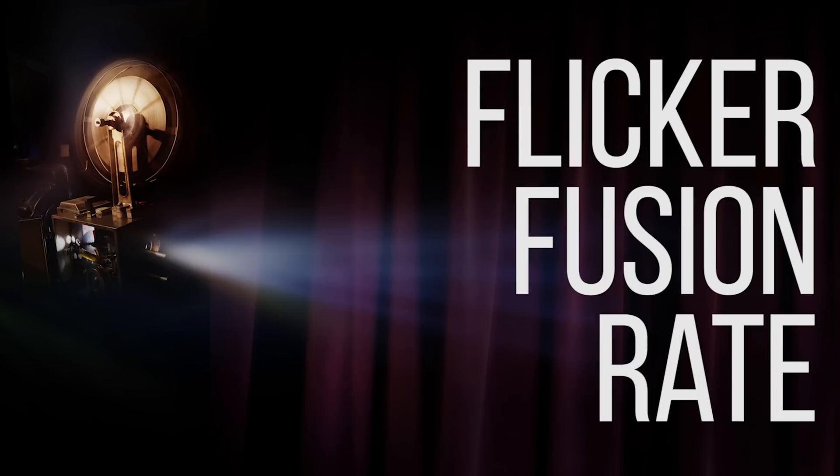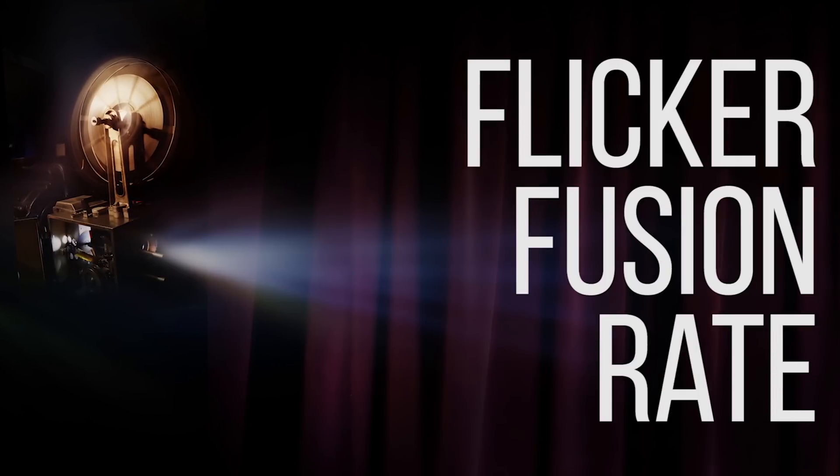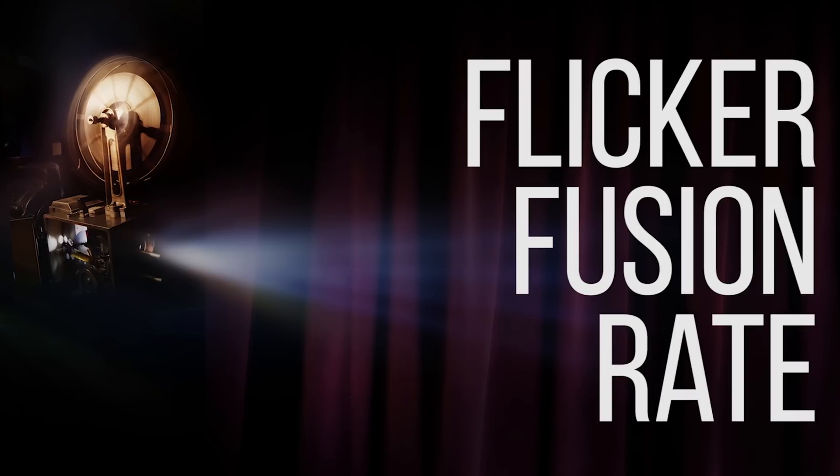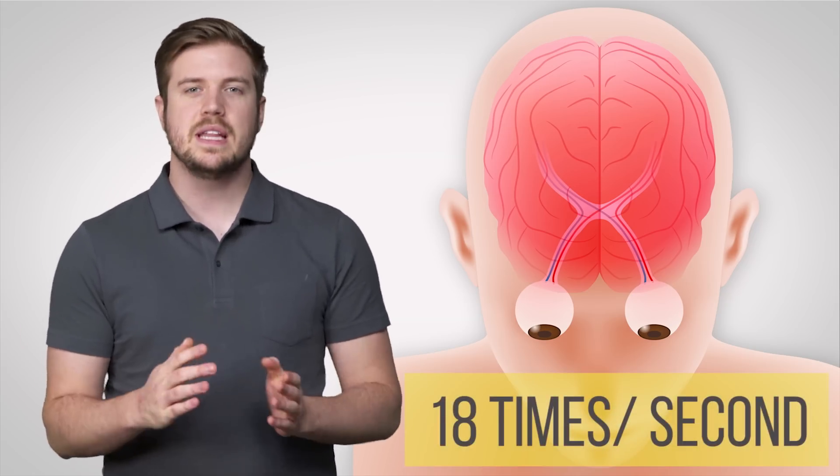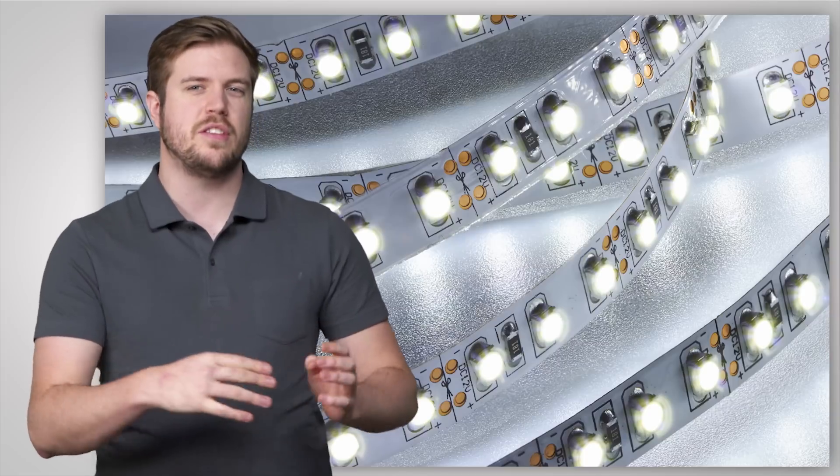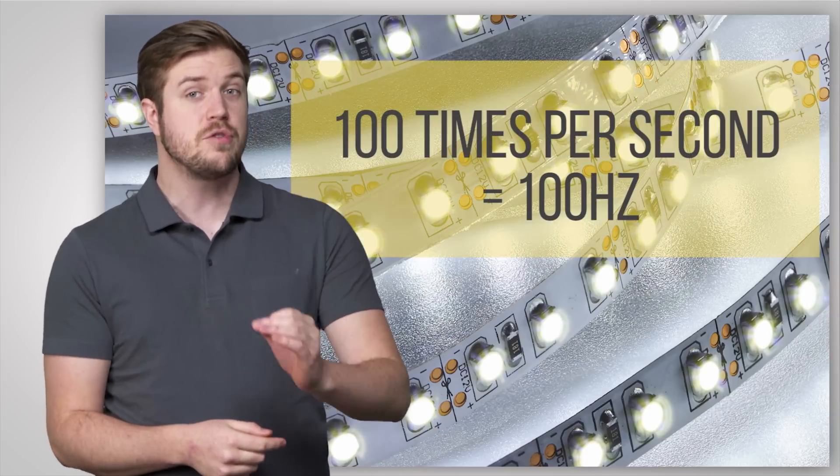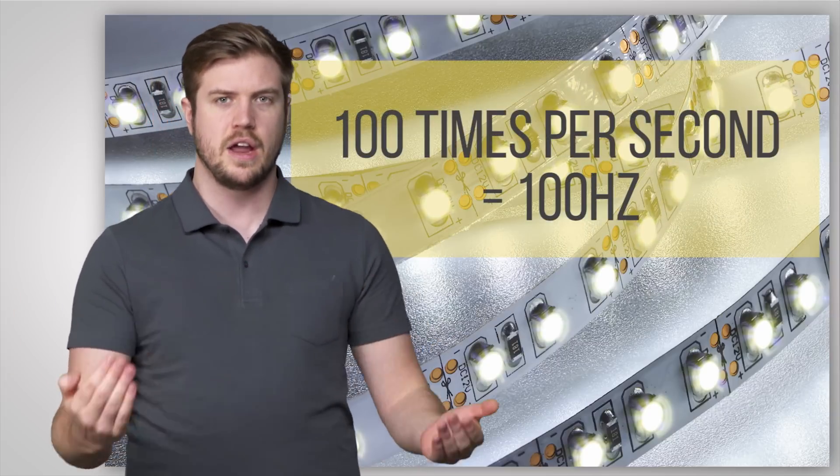To make the LED appear dimmer, the on-off switching has to be faster than the flicker fusion rate, or how quickly a light has to turn on and off to be perceived by the brain as being continuously on. In humans, the flicker fusion rate is around 18 times per second. Typically, LEDs controlled by PWM will be switched on and off over 100 times per second, or 100 hertz.